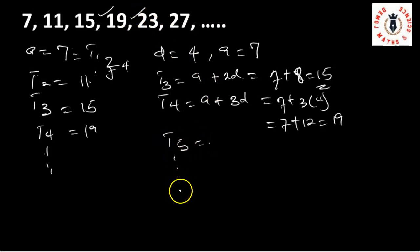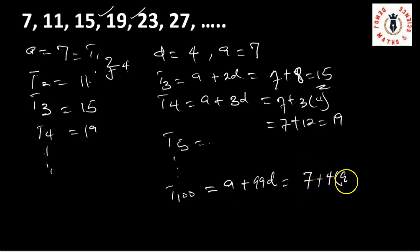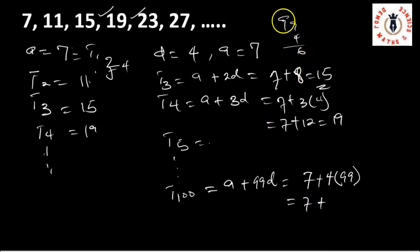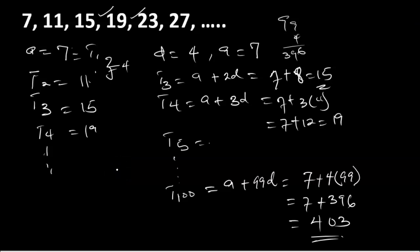The same applies to t5. If you're asked to find the 100th term, t100, all you need to do is plug into the formula: a plus (n minus 1) times d equals 7 plus 99 times 4 equals 7 plus 396, which equals 403. This shows the relevance of being able to find the nth term of an arithmetic progression.